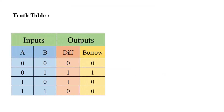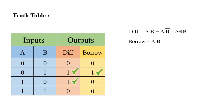This is the truth table of half subtractor. From this truth table we can directly get the expression of difference and borrow in the form of sum of products. So difference = A̅·B + A·B̅, that means A XOR B, and borrow = A̅·B.